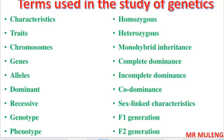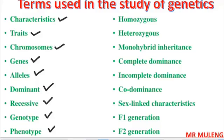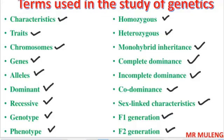Let us now look at the terms used in the study of genetics. These terms include: characteristics, traits, chromosomes, genes, alleles, dominant and recessive, genotype and phenotype, homozygous, heterozygous, monohybrid inheritance, complete dominance, incomplete dominance, codominance, sex-linked characteristics, and first filial generation (F1) and second filial generation (F2). You must understand what each of these terms means.